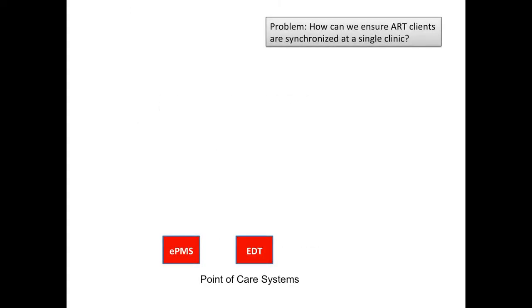To begin with a little bit of context, in Namibia there are several electronic systems deployed at a clinic level related to ART services. One is the EPMS, or Electronic Patient Monitoring System. Another is EDT, the Electronic Dispensary Tool. One of the questions we have is how do we ensure that when a client is enrolled in a care regimen via the EPMS system that specifies the medications they need to take, that same client is actually receiving the medicines as tracked in the EDT tool.